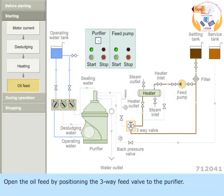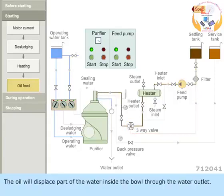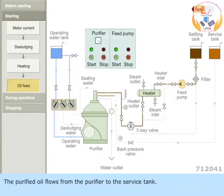Open the oil feed by positioning the 3-way feed valve to the purifier. The oil will displace part of the water inside the bowl through the water outlet. The purified oil flows from the purifier to the service tank.